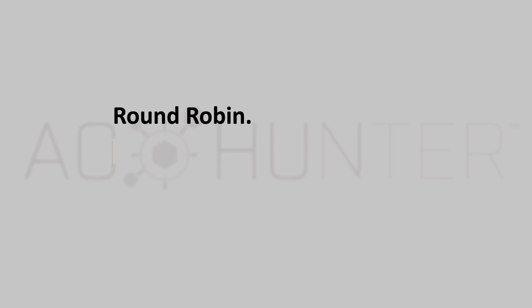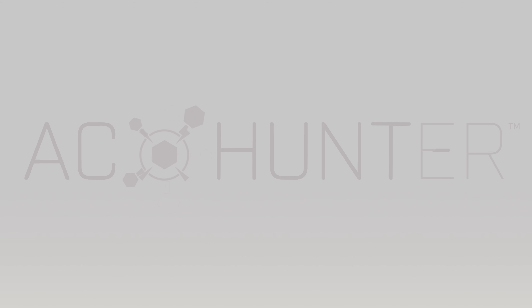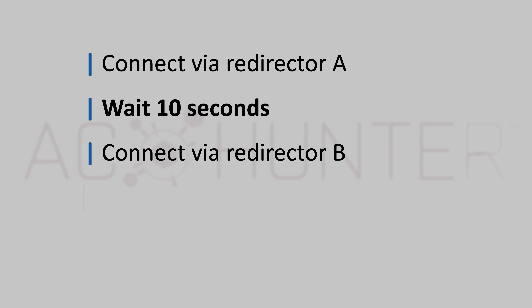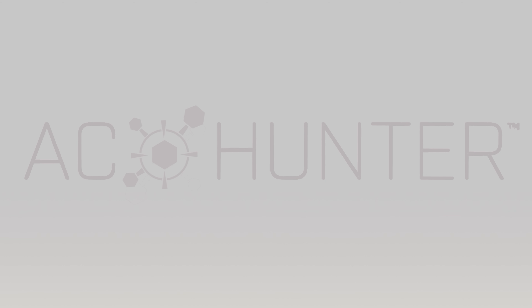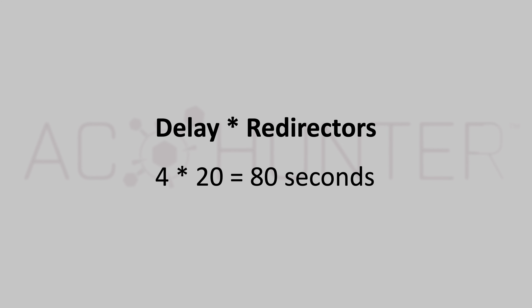With a round robin rotation strategy, connections rotate one by one in a deterministic manner between each redirector. With two redirectors, this effectively doubles the delay for each individual redirector. For example, with a delay of 10 seconds: connect via redirector A, wait 10 seconds, connect via redirector B, wait 10 seconds, connect via redirector A again — so the time between subsequent connections via the same redirector is now 20 seconds. The key takeaway: take the delay and multiply it by the number of redirectors. With four redirectors and a 20-second delay, each individual redirector's graph would be identical to a single redirector with an 80-second delay.